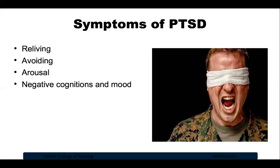Arousal symptoms include excessive emotions, problems relating to others including feelings of showing affection, difficulty falling or staying asleep, irritability, outbursts of anger, difficulty concentrating, and being easily startled. The person may also suffer physical symptoms such as increased blood pressure and heart rate, rapid breathing, muscle tension, nausea, and diarrhea. Negative cognitions and mood refers to thoughts and feelings related to blame and memories of the traumatic events.